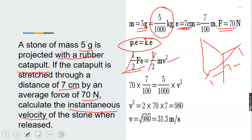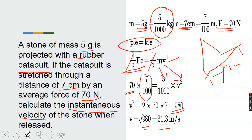Input your values. F is 17 N and your extension is 7 over 100, equals 5 over 1000 which is the mass. You have v squared equals 2 times 17 times 7 over 100, which gives 980 divided appropriately. The square root of 980 equals 31.3 meters per second — that is the velocity with which the stone leaves the rubber.